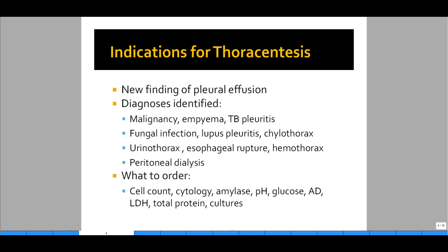What do we order to analyze pleural effusions? You always want to order a cell count, cytology, amylase, pH, glucose, adenosine deaminase, LDH, total protein, and cultures. We'll go over how to interpret all these sets of data to figure out what is causing a pleural effusion in a patient.